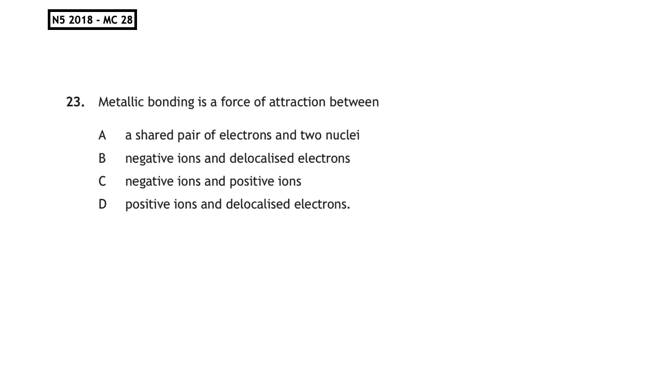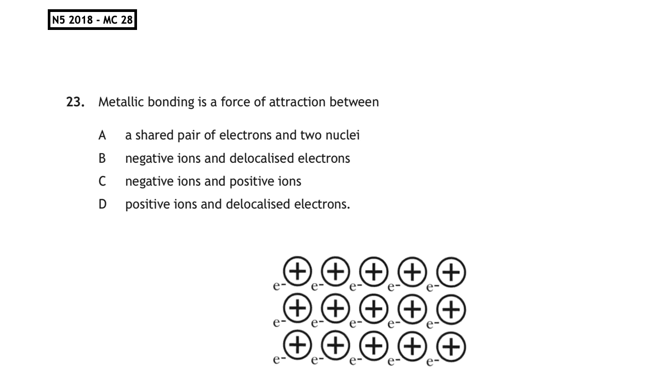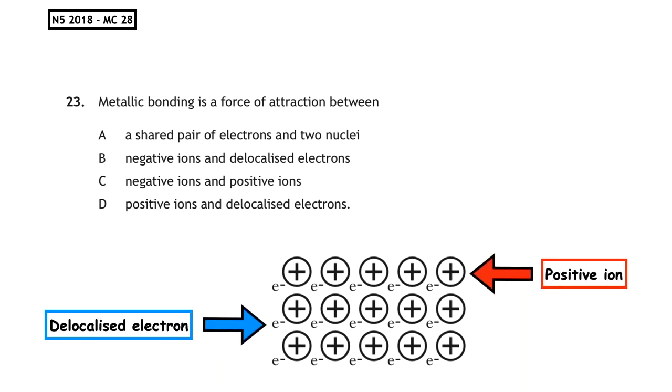This past paper question is from the National 5, 2018, Multiple Choice 28. Metallic bonding is the force of attraction between. Now, we already know that metals want to lose electrons to form positive ions. So we want to make sure that we are looking for the positive ions. The only one that says that is multiple choice answer D. This is a key definition that we have to know.